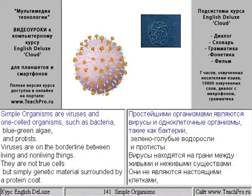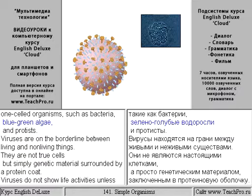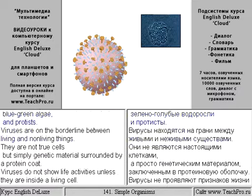Simple organisms are viruses and one-celled organisms, such as bacteria, blue-green algae, and protists.